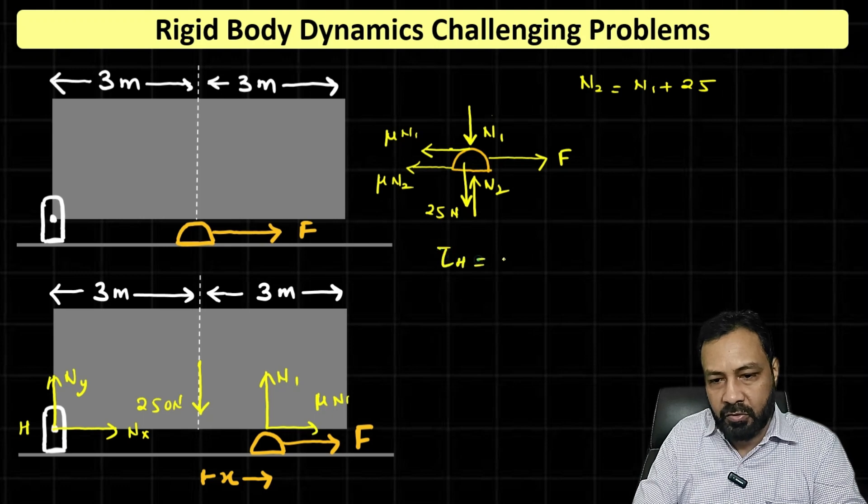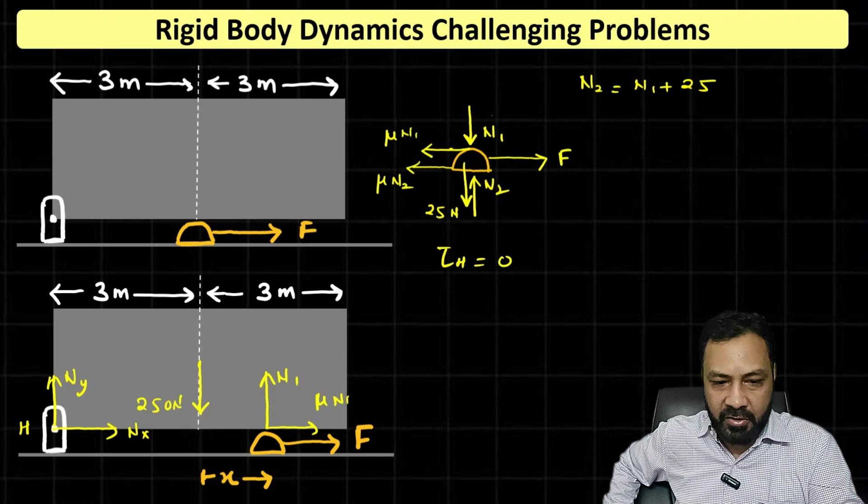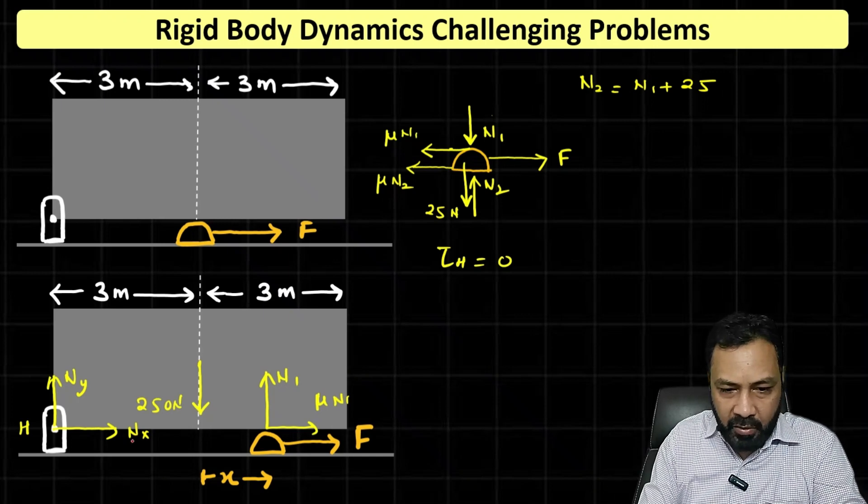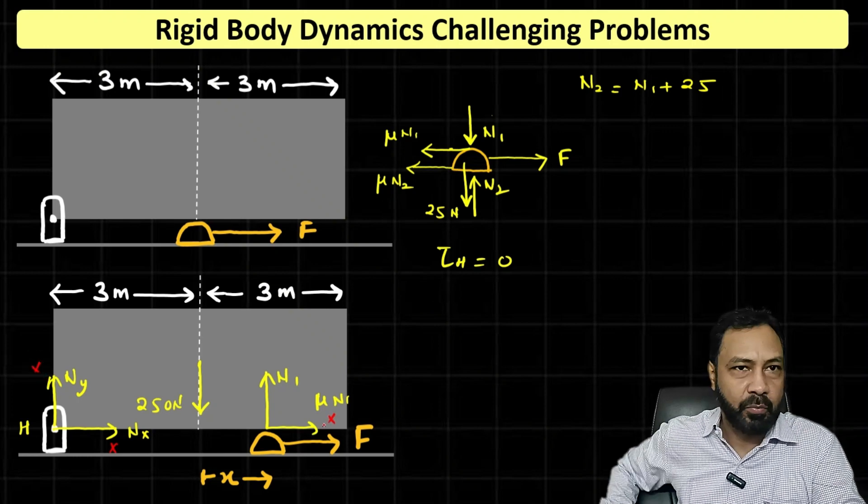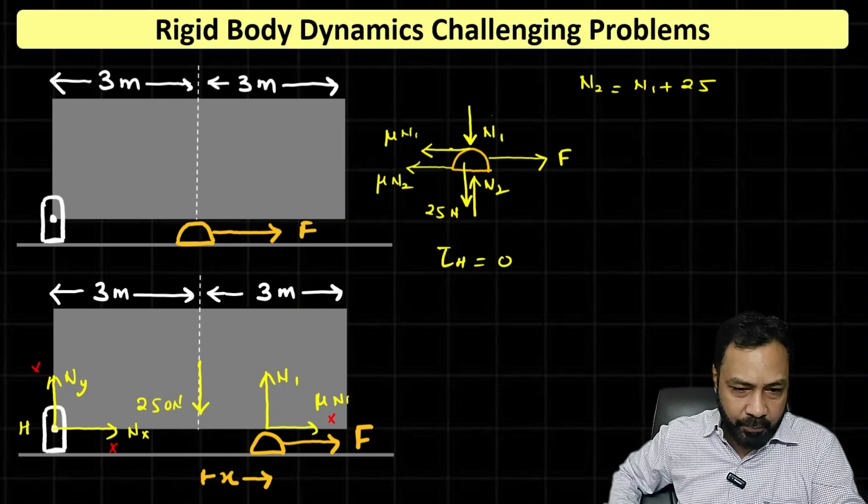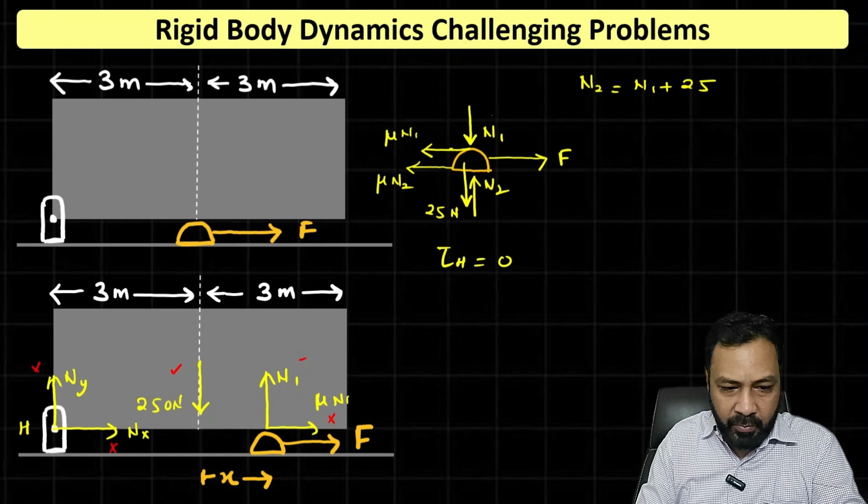Torque about H equals zero at this general moment when the peg has moved a distance x. Torque because of these forces Nx, Ny, and μN1 is zero because their line of action is either at H or towards H. So torque is only because of these two forces and they have to be opposite.